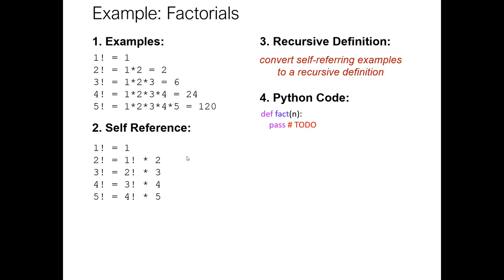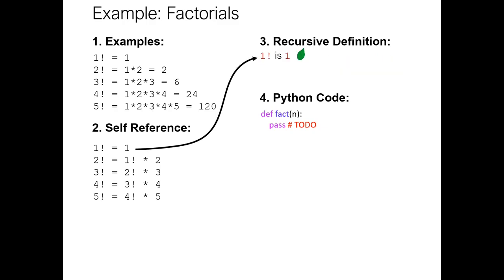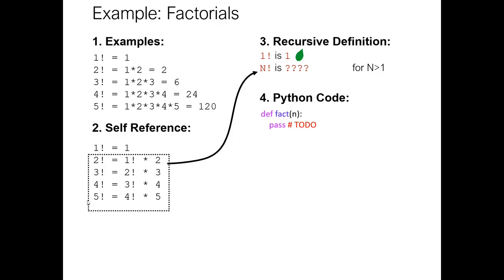Next, I'm going to convert all of these self-referring examples into a single recursive definition. This is always going to have two parts for a recursive function. First, I have the base case — I highly recommend writing the base case first so you don't forget it. One factorial is one — very simple, write it first, get it out of the way. This is what's going to terminate the recursion when I get down to the end. Then the recursive case: if I have n factorial, it's equal to n minus one factorial times n. That's my branch.